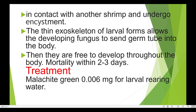The thin exoskeleton of larval forms allows the developing fungus to send germ tubes into the body. The fungus is then free to develop throughout the body. Mortality generally occurs within two to three days. Treatment: malachite green at 0.006 mg is used for larval rearing water.